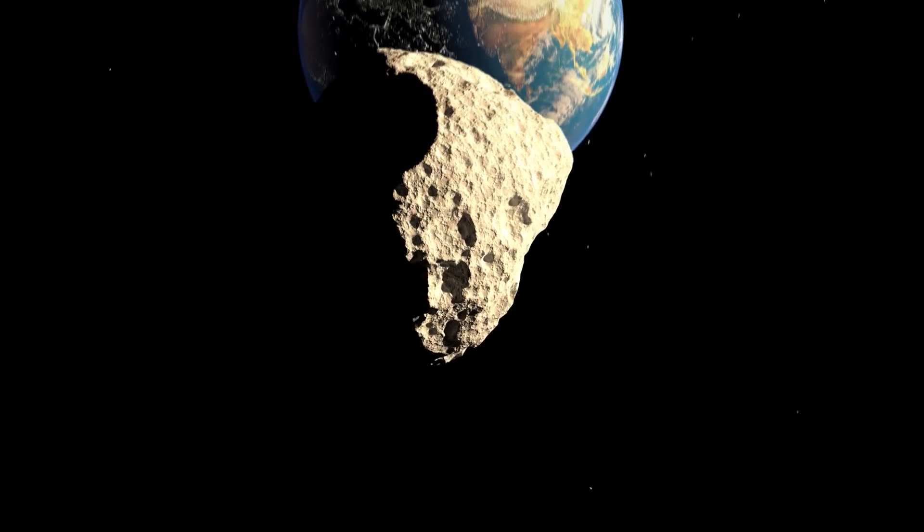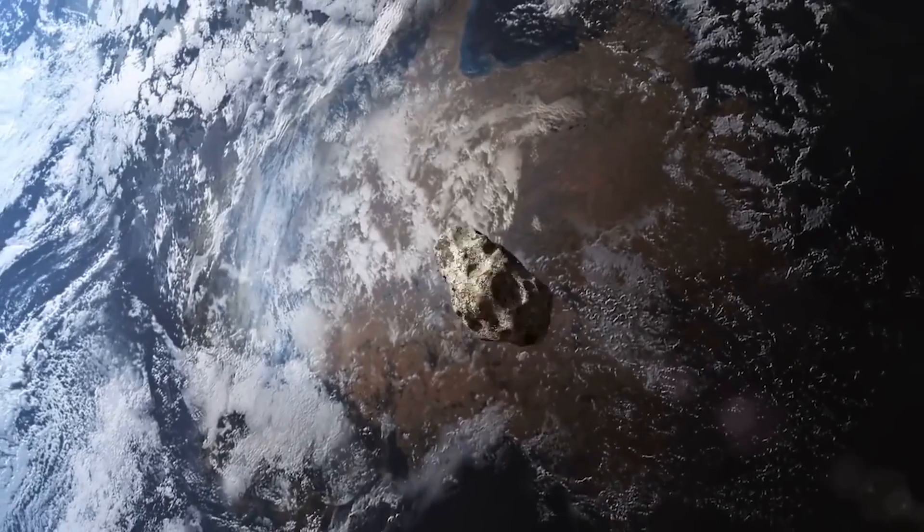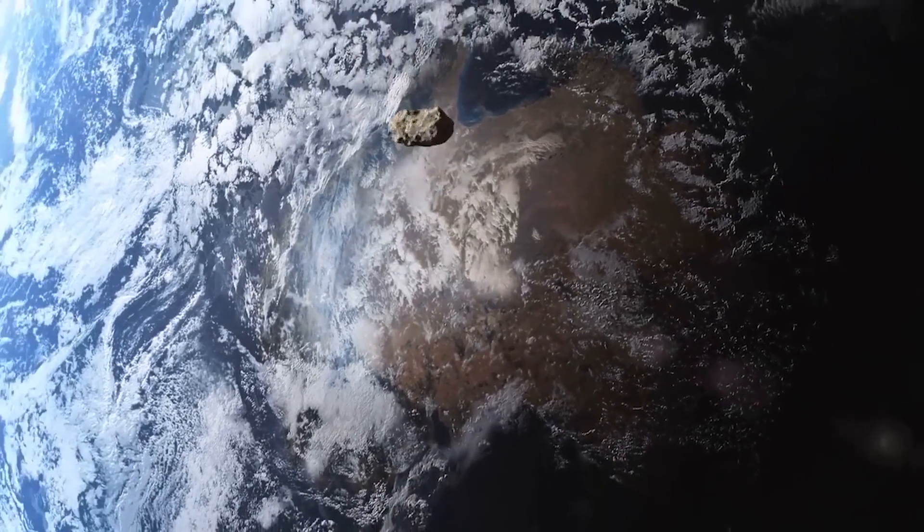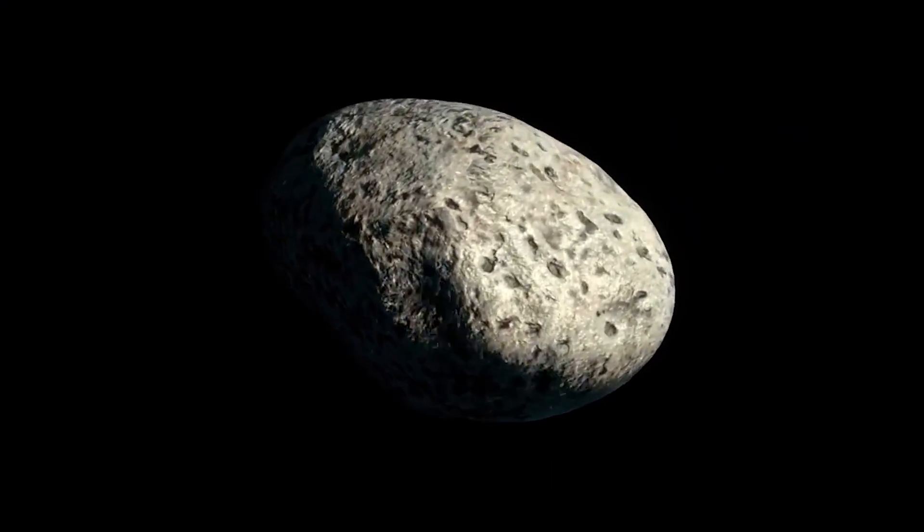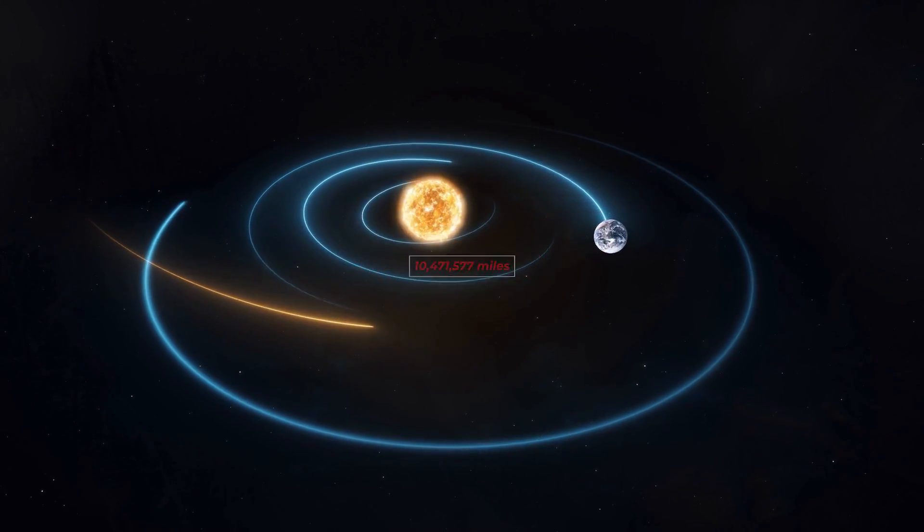On Friday, the 5th of March 2021, an asteroid classified by NASA as a potentially hazardous asteroid flew past Earth at a safe distance of 10,471,577 miles from Earth.